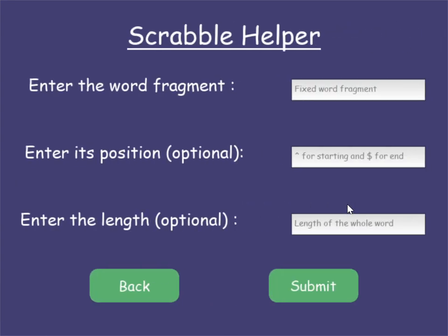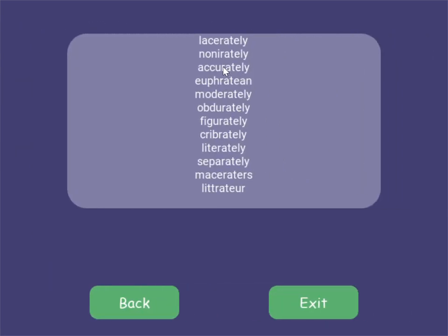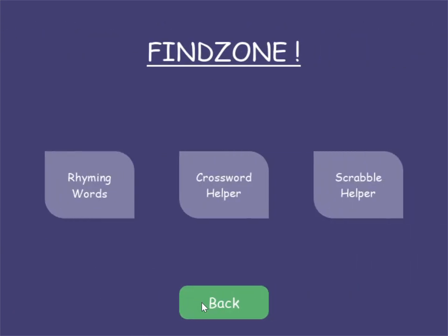Next up is the Scrabble Helper. We love to win in Scrabble, so cheating comes naturally to us — yes, I am a cheater. I enter a word fragment, let's say 'rate', specify the length to be 10 and a position of 5. When I submit it, I get a list of words which have 'rate' in the 5th position and the whole word has a length of 10. That was all about Find Zone.